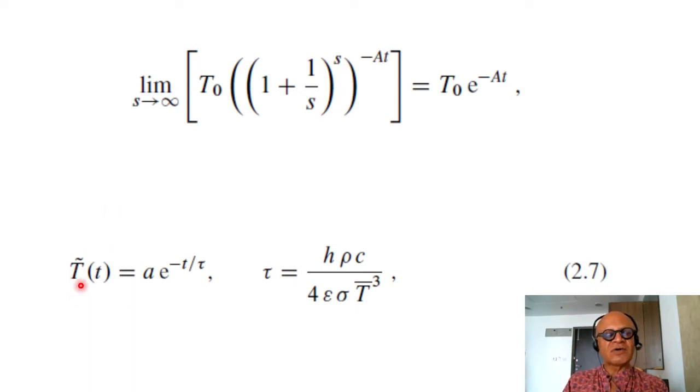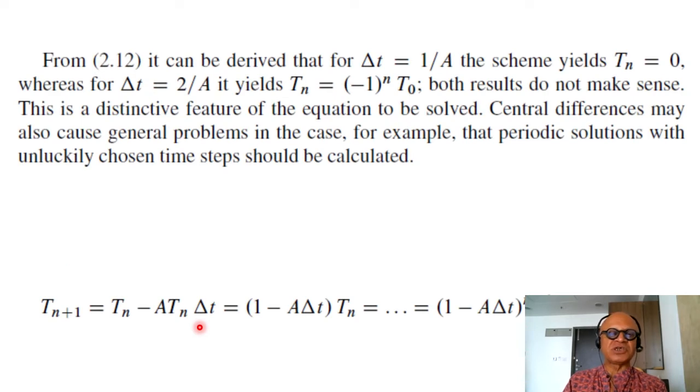So here again our solution was T tilde T is A equal A times e to the minus T over tau. Tau was the characteristic time we said H rho C divided by 4 epsilon sigma T bar to the cube. So that's the similar solution we are getting via the discretization.